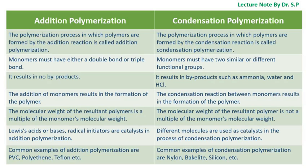Common examples of addition polymerization are PVC, polyethene, Teflon, etc. Common examples of condensation polymerization are nylon, bakelite, silicone, etc.